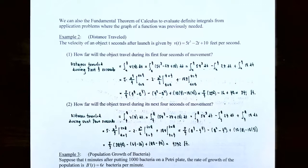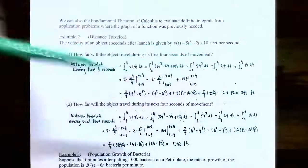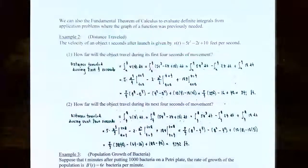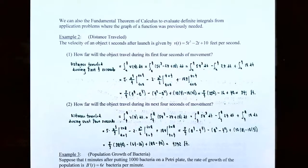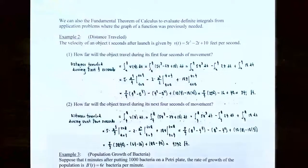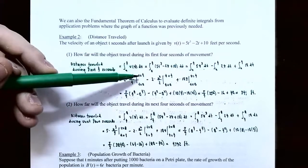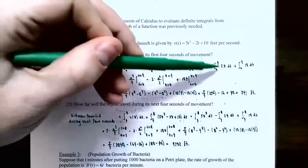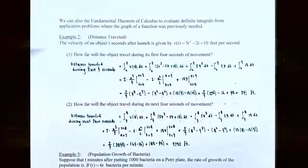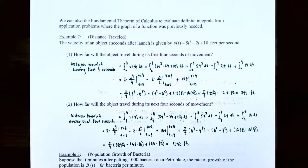Separate into three integrals: the integral from 0 to 4 of 5t cubed dt, minus the integral from 0 to 4 of 2t dt, plus the integral from 0 to 4 of 10 dt. Find the antiderivative of each term: 5 times t to the fourth divided by 4, evaluated at t equals 4 and t equals 0. The antiderivative of 2t: the twos cancel giving t squared, evaluated at t equals 4 and t equals 0. The antiderivative of 10 with respect to t is 10t, evaluated at t equals 4 and t equals 0.